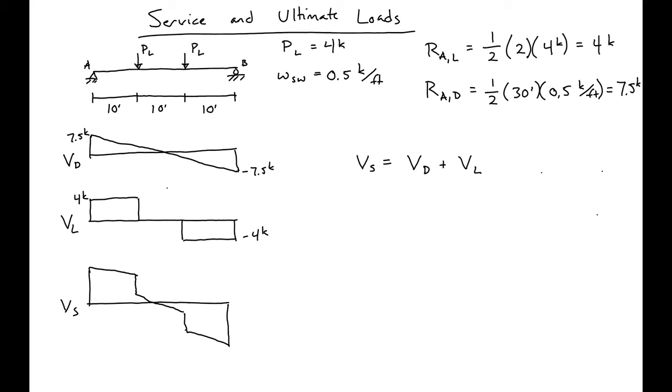And our value here would be just the seven and a half plus the four. So we would have 11.5 kips and negative 11.5 kips.